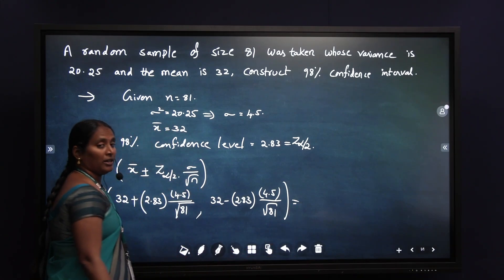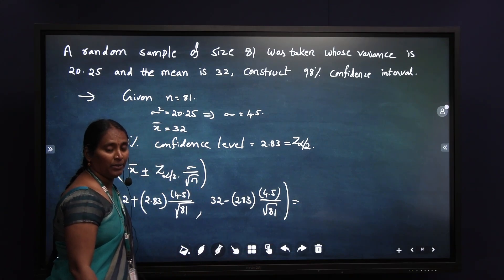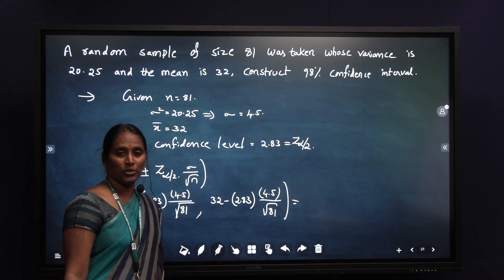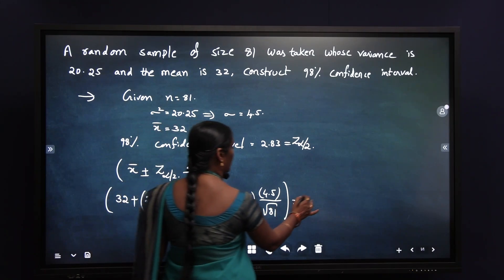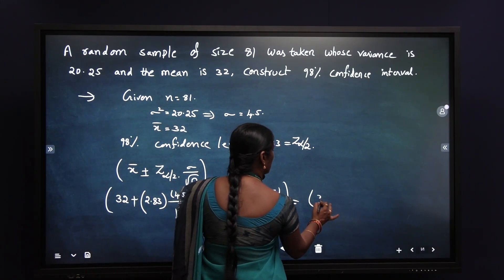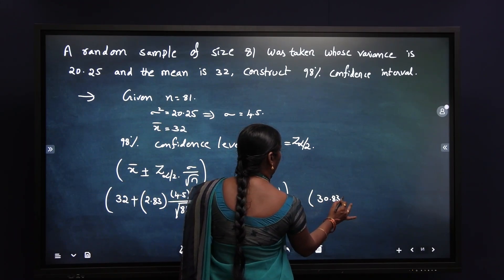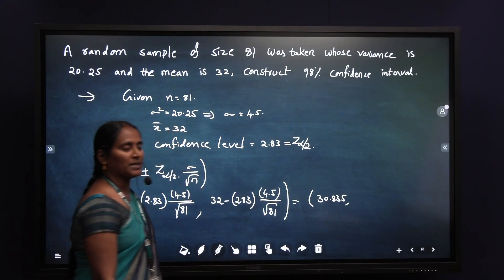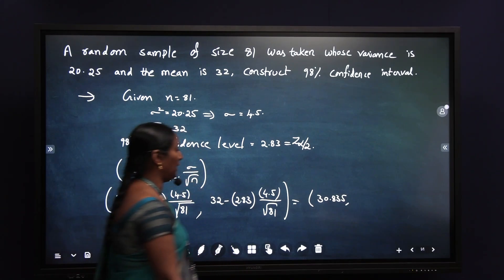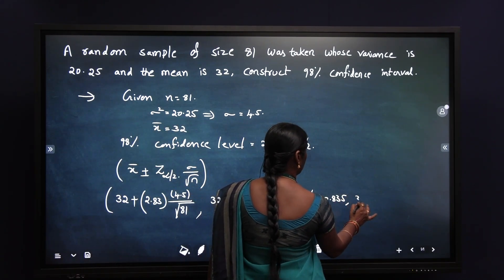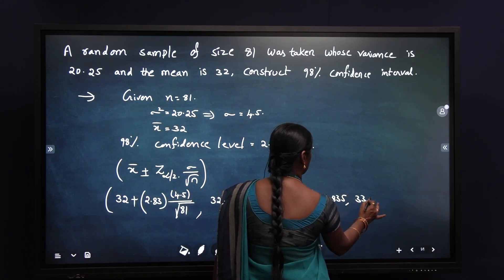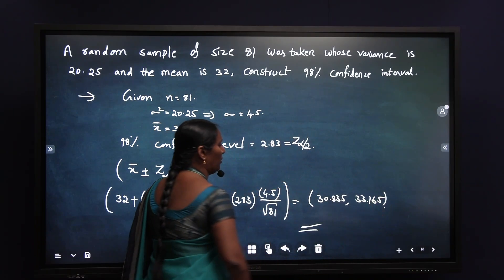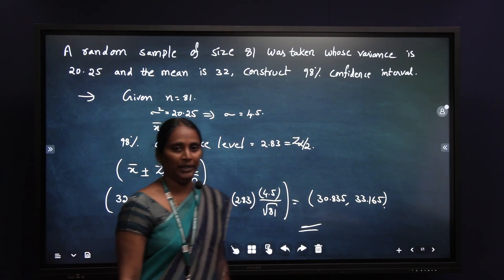An interval estimate of the population parameter is given by two different values. This is the solution of the given problem. By adding, we will get 33.165. By subtracting these observations, we are getting 30.835. This is the solution of the given problem of single mean.